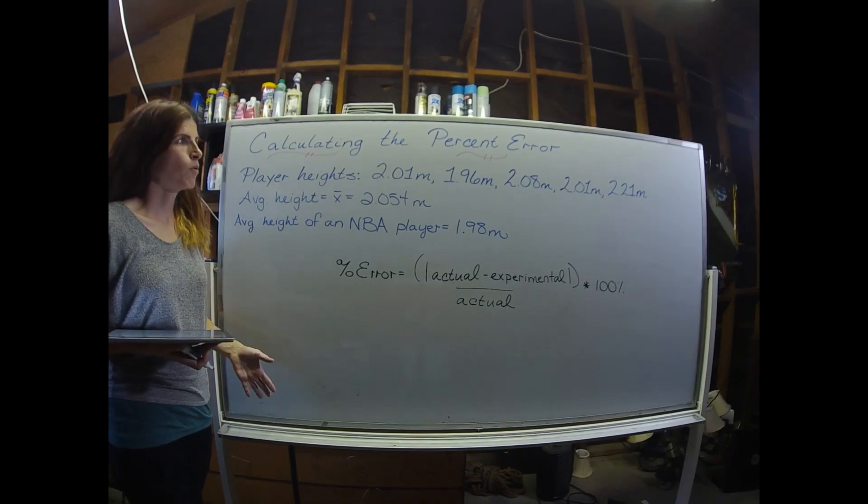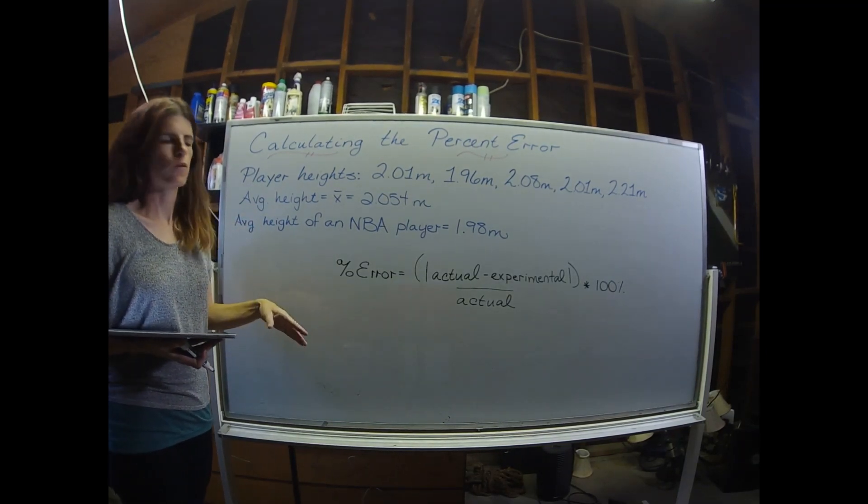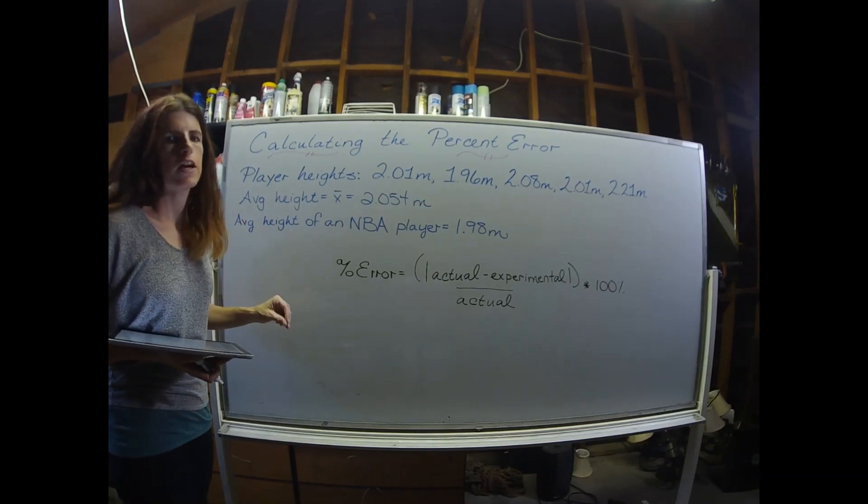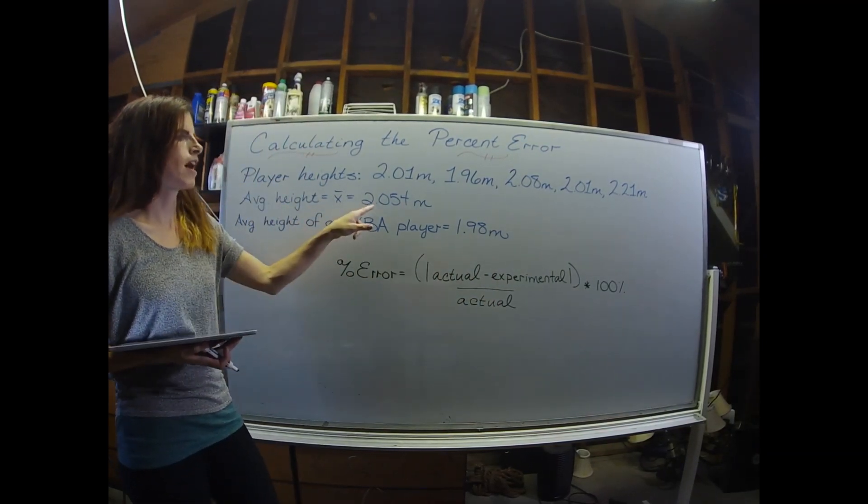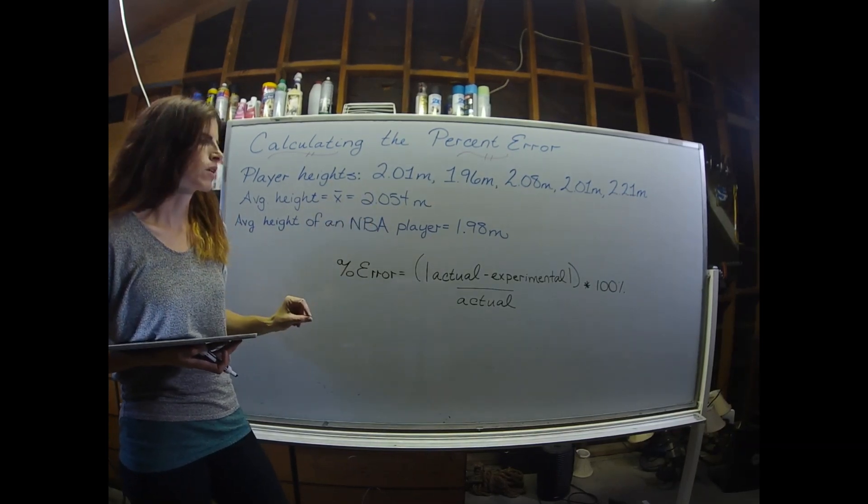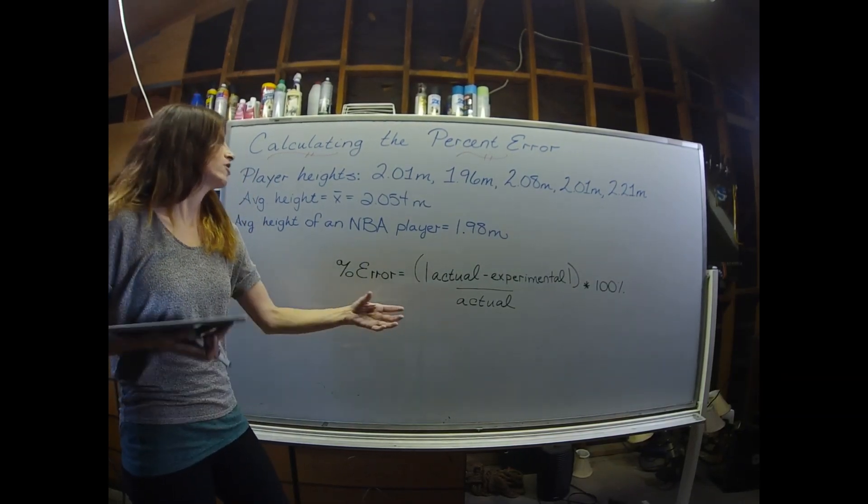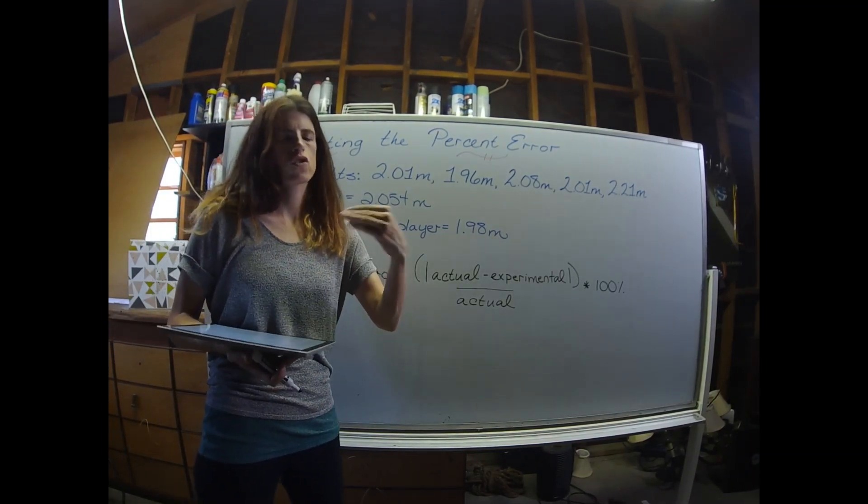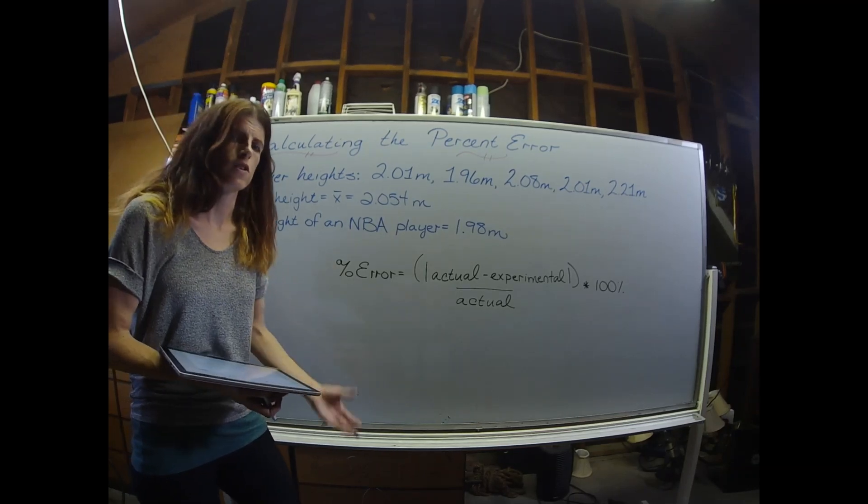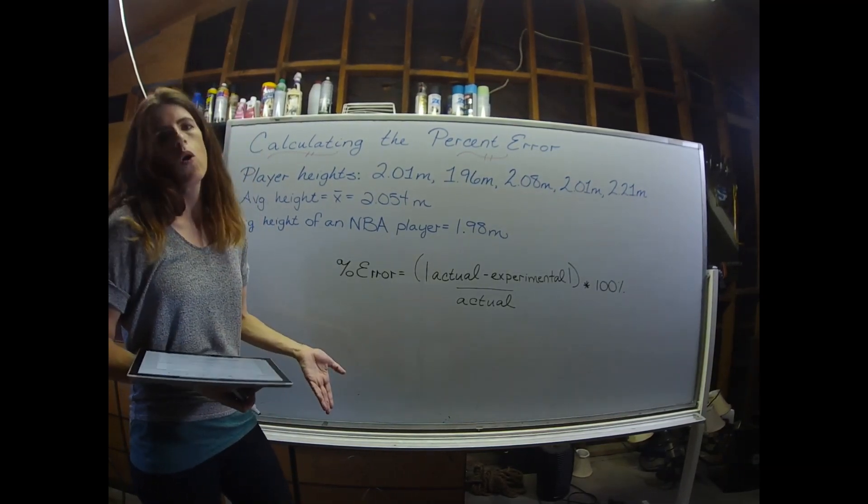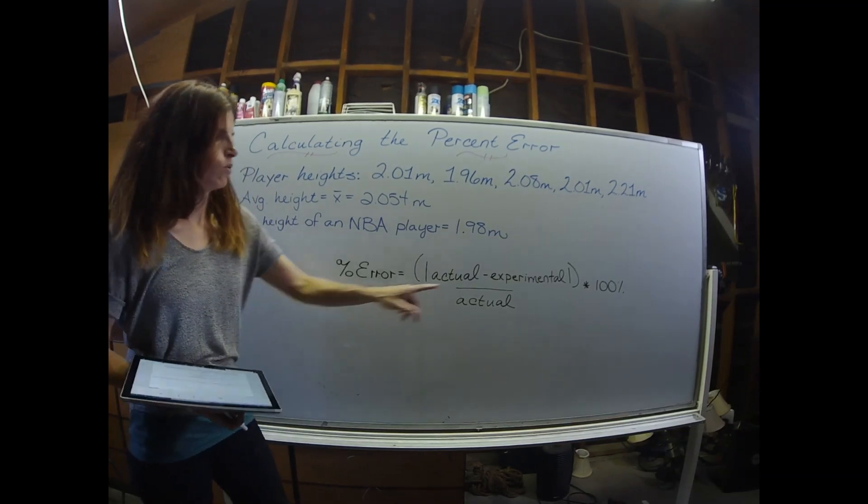For the last part of this problem, we're asked to calculate the percent error between our average value and a known or actual value. In this case, we're going to use the average height of an NBA player as our actual value. Our experimental value is the average height that we calculated, that x-bar. In the write-up, I do call this a percent difference. But the calculation is exactly the same. I just don't think in this case, since we're looking at the starters of the Mavericks versus the NBA heights as a whole, that it's appropriate to call it an error. It's more like a difference. But in the lab, you're definitely just going to call it a percent error. You're comparing the value that we know to be true against your average value or your experimental value.